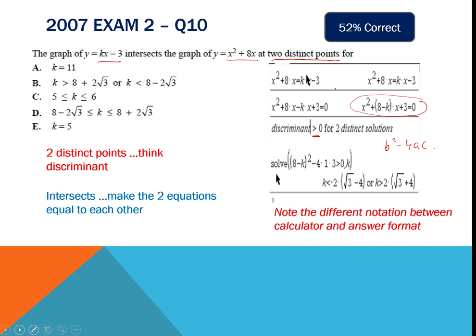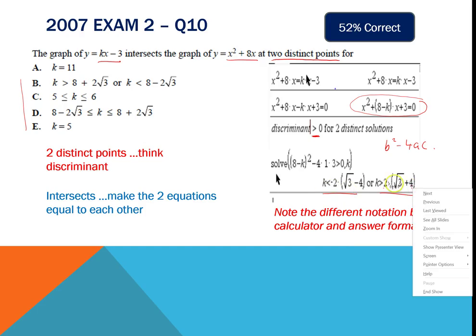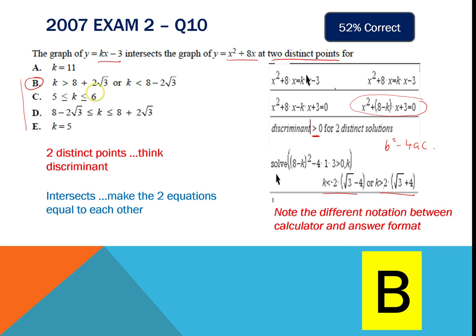A very common thing examiners do is give you the answer in a different format from what your calculator produces. Understanding that the calculator result is actually 2 times root 3 and 2 times 4 which is 8, and negative 2 times root 3 with negative 2 times 4 also being 8 — being able to identify which answer corresponds to your calculator output. The answer is B: k is greater than 8 plus 2 root 3, or less than 8 minus 2 root 3.